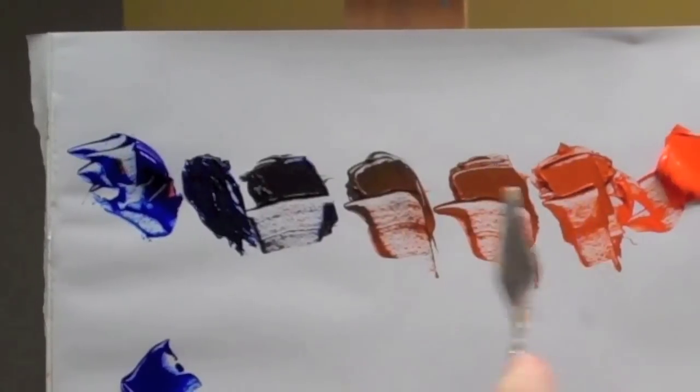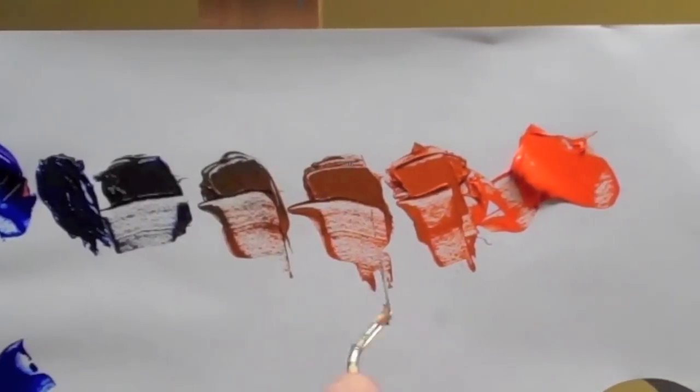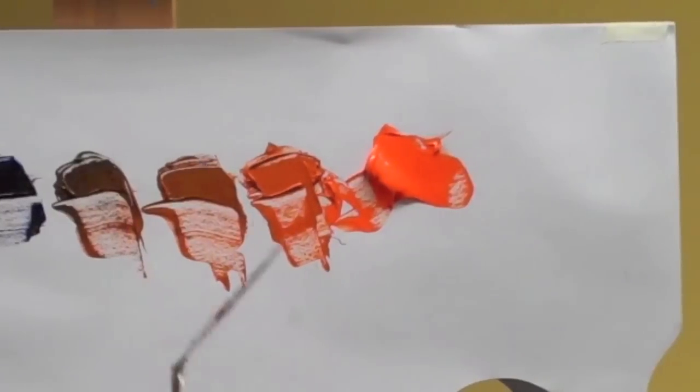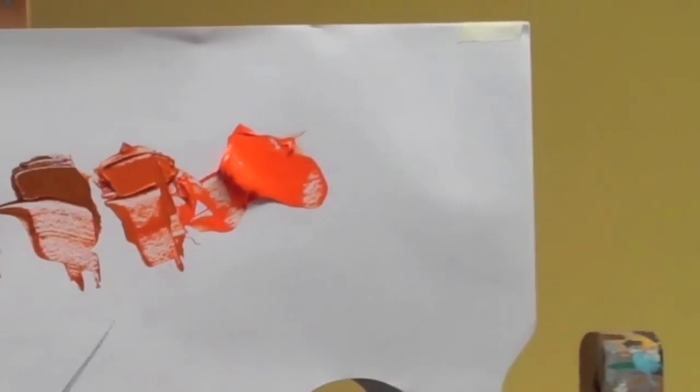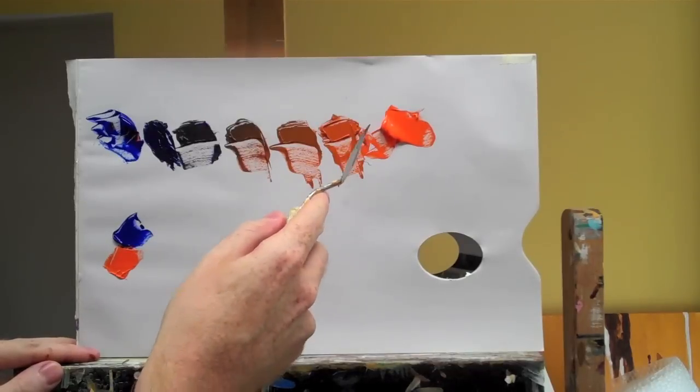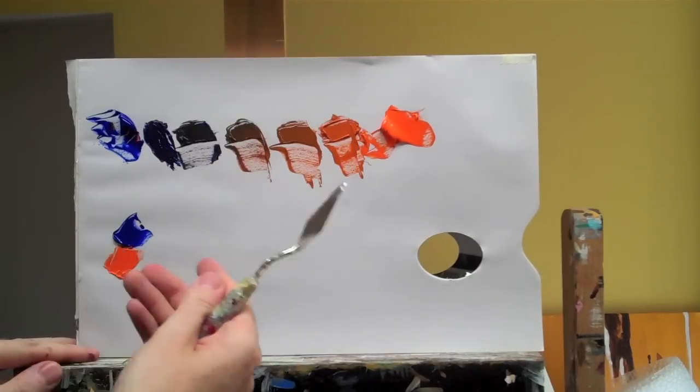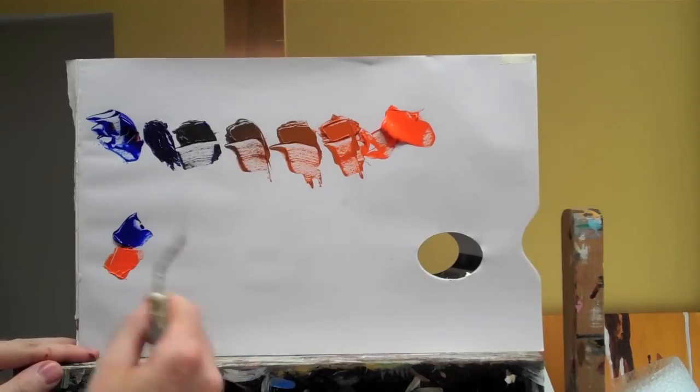So here you can see a tonal range and how by using the color's complement you can get a muted version of that color. You can tone down orange with black as well, it would just slightly deaden the color a bit more than if you used its complement.